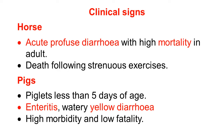Clinical signs of enterotoxemia type A. In horses, it causes acute profuse diarrhea with high motility in adults, and death occurs following strenuous exercise. In pigs, mostly piglets less than 5 days of age are affected. There is enteritis manifested by watery yellow diarrhea. The disease causes high morbidity and low fatality rate.